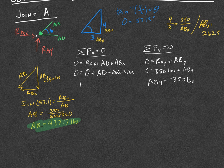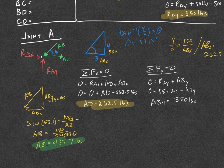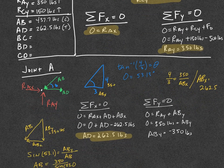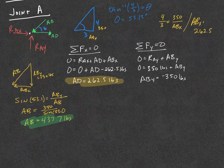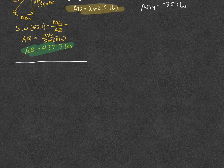So I put negative 262 pounds in the sum of forces in the X equation, which means AD equals 262.5 pounds going to the right — away from the joint — which implies tension.